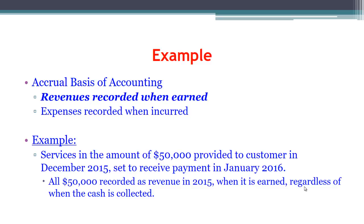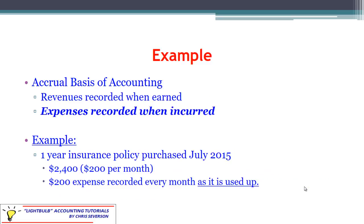We don't record revenue based on when cash is collected — for revenue recognition purposes under the accrual basis, we earned it in 2015, so we record it in 2015. Nothing is recorded as revenue in 2016 for that transaction. For the one-year insurance policy purchased in July 2015 at $200 per month, we record a $200 expense every month as the policy is used up — half in 2015 and half in 2016.